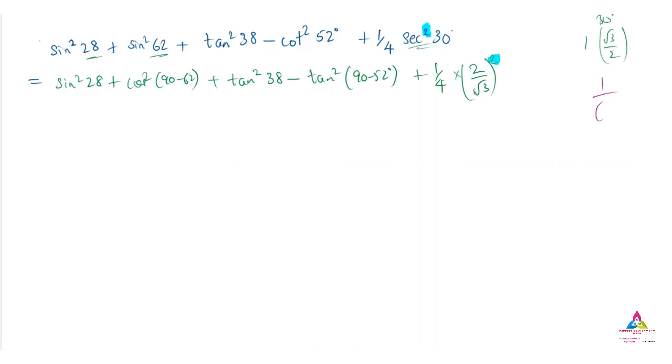Remember, so it is nothing but root 3 by 2 is cos 30, so its reciprocal is 2 by root 3. Next step is here the calculation part.